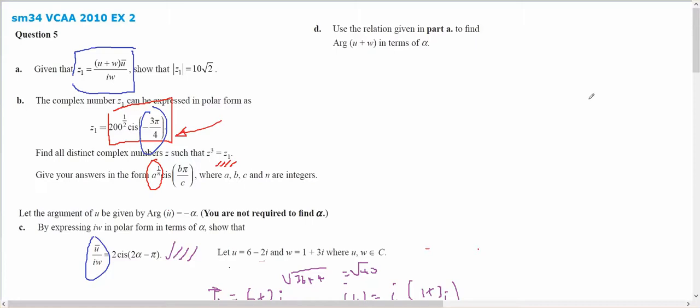Use the relation given in part A, so I need to use what I've been given in part A. What I was given in part A was Z1 equals this, and Z1 is defined in part B, and I know the argument of Z1 equals negative 3 pi on 4. And I know that Z1 equals U plus W.